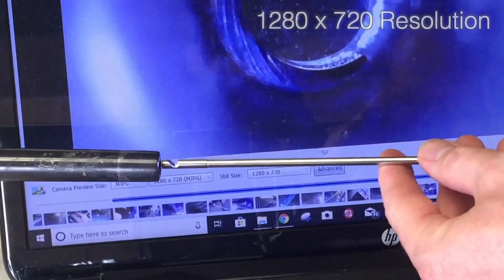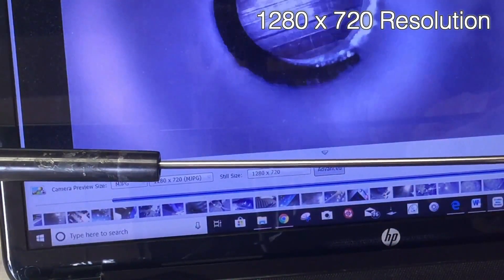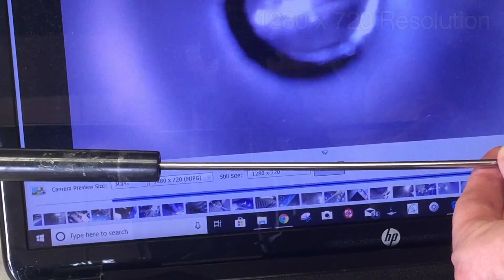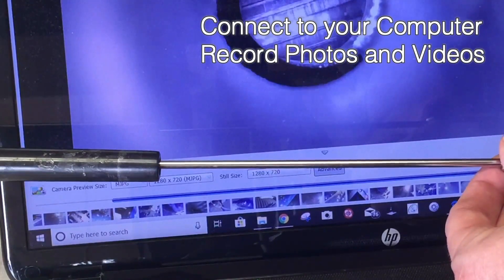Connect to your computer or other devices for a clear and bright 1280 by 720 image. Record photos and videos of your inspection with the software.